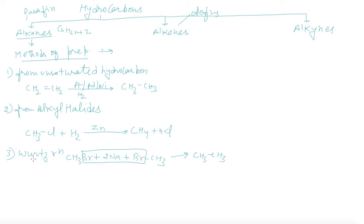Then we can take from Wurtz reaction. CH3Br + 2Na + BrCH3 in dry ether. This reaction takes place in dry ether and we will get alkane.